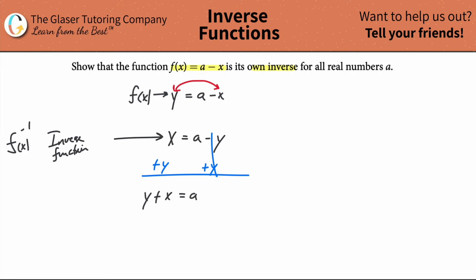And then we've got to get rid of the x. So subtract it from both sides. And what do we get when we do that? y is equal to a minus x.